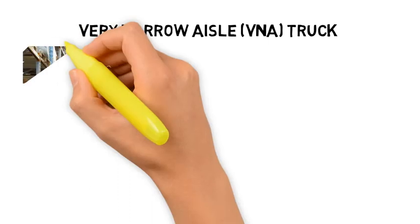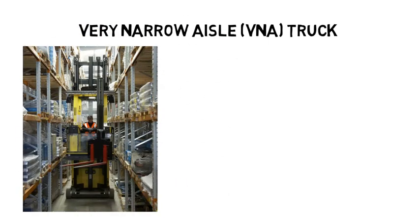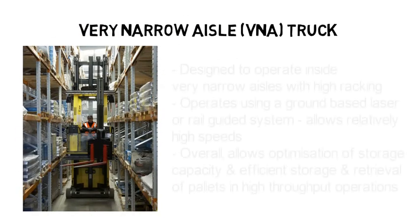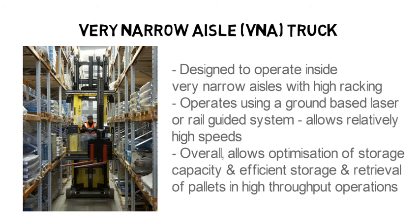The Very Narrow Aisle truck, otherwise known as the VNA truck, is designed to operate inside very narrow, high racking. It operates using a ground-based laser system or rail-guided system which guides the unit as it moves down the aisle, allowing it to move at relatively high speeds. Overall, it allows optimisation of storage capacity and efficient storage and retrieval of pallets in very high throughput operations.